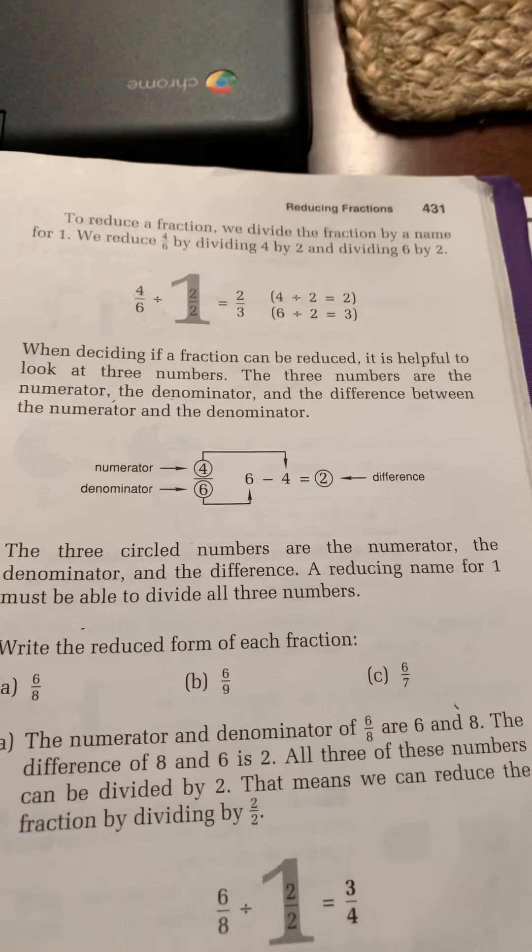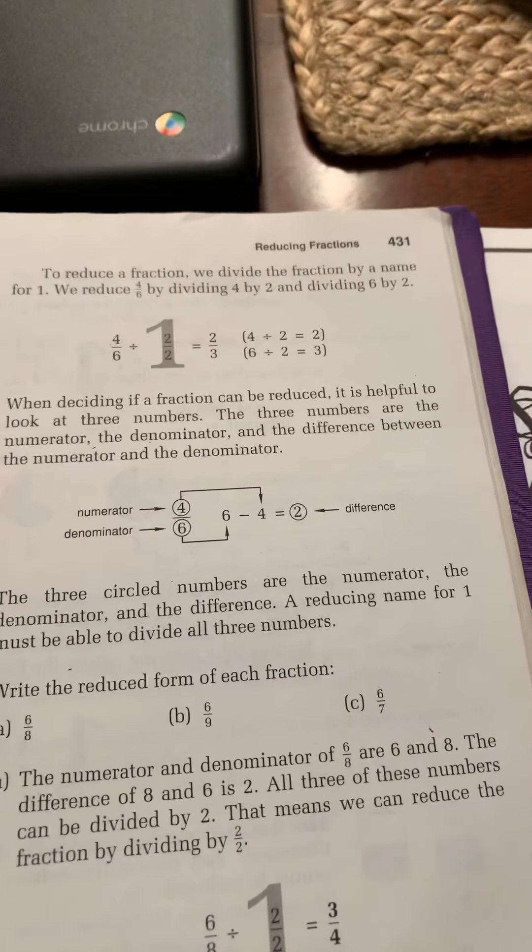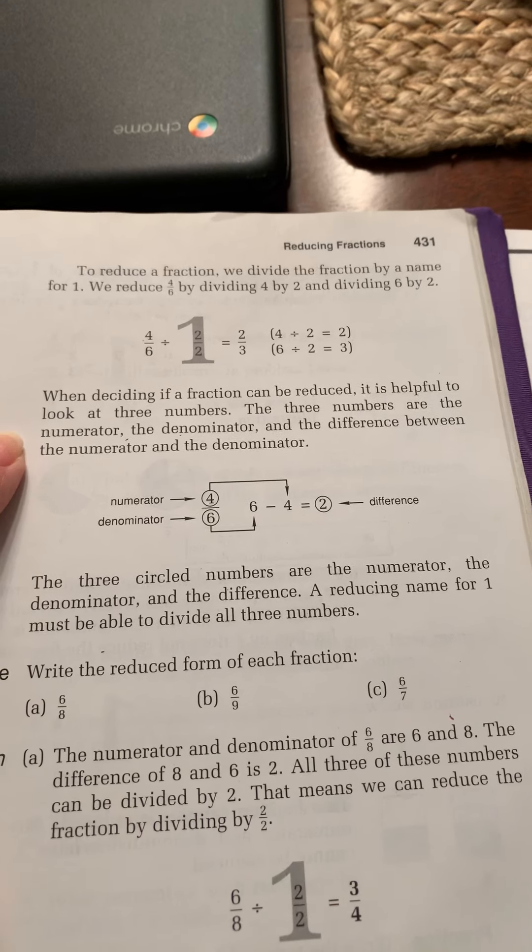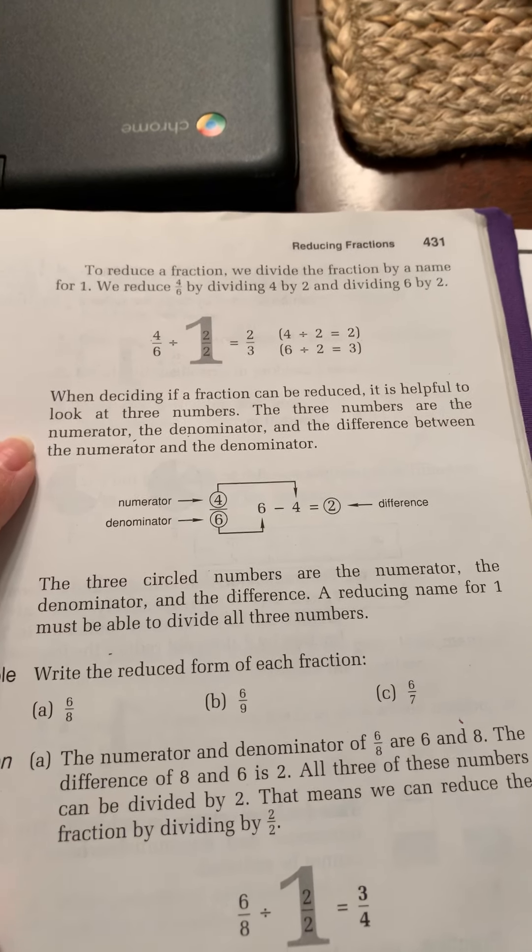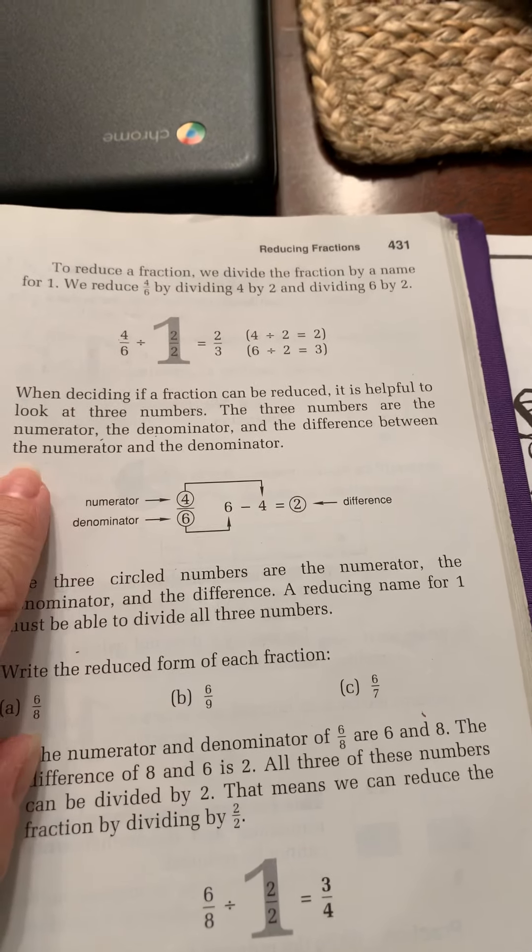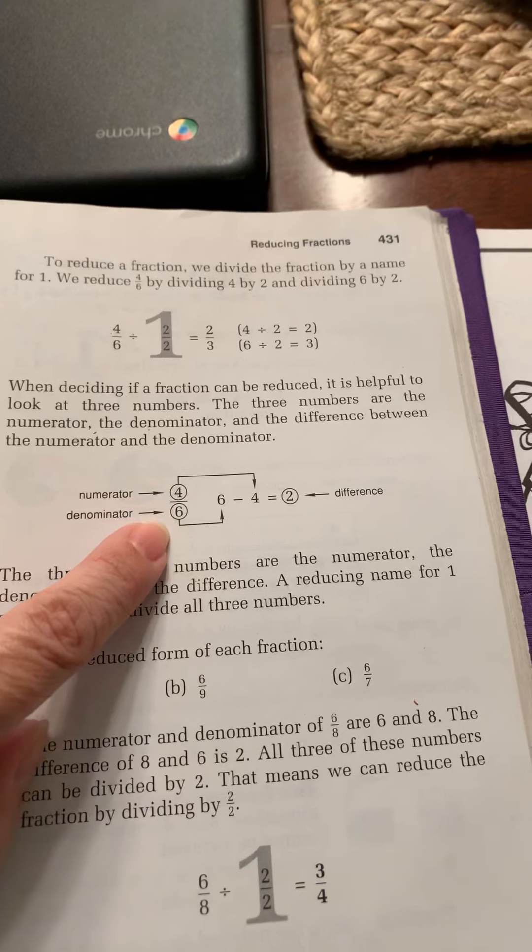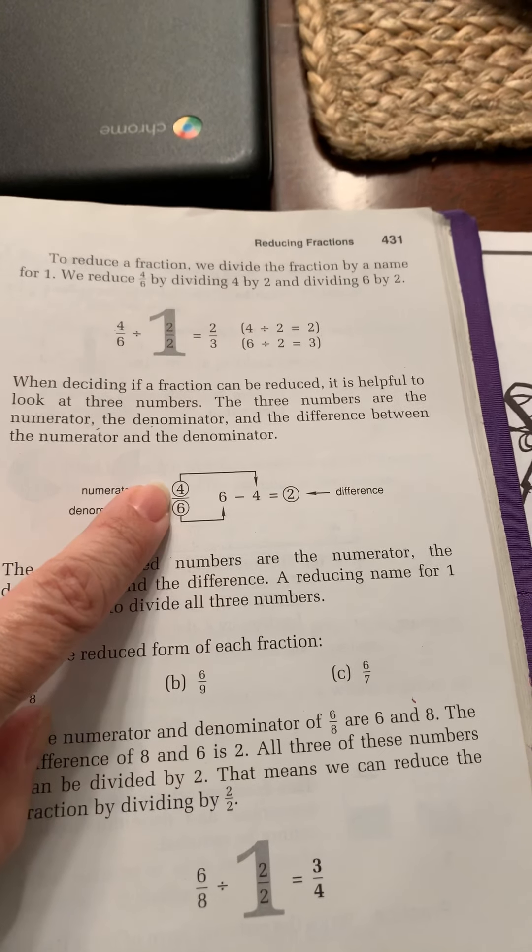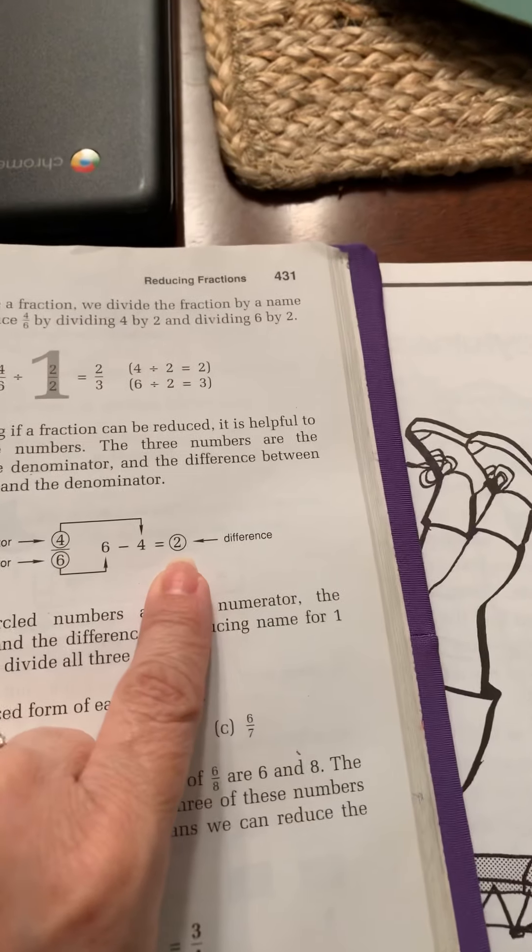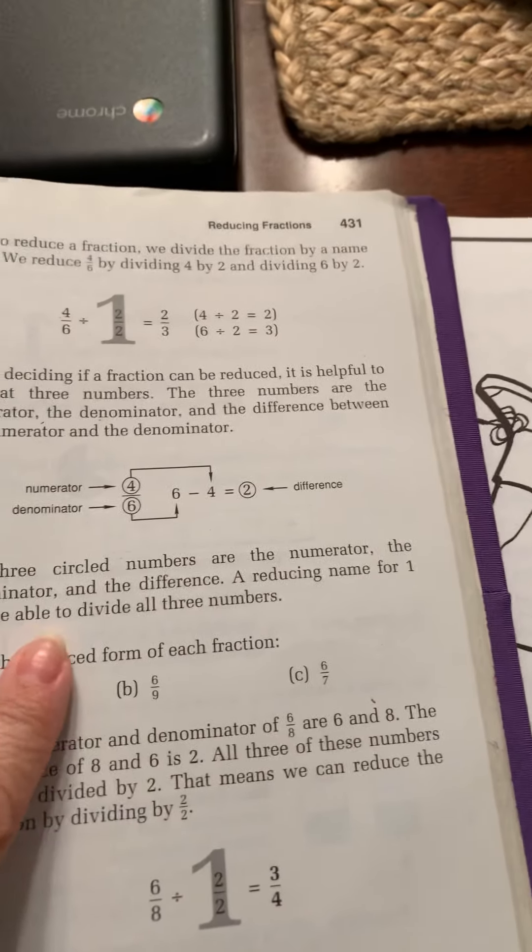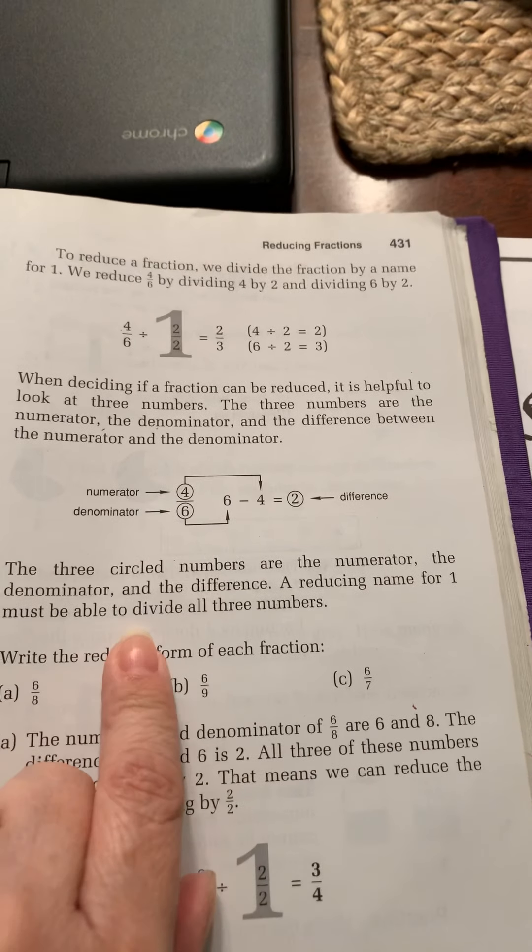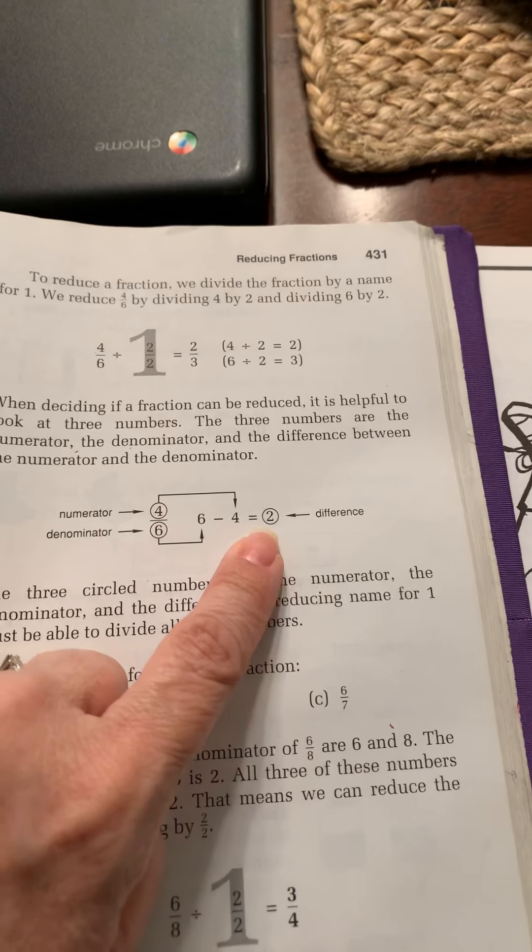When deciding, this is the key right here. When deciding if a fraction can be reduced, it is helpful to look at three numbers. The three numbers are the numerator, the denominator, and the difference between the numerator and the denominator. So the difference between these is two. The circled numbers are the numerator, the denominator, and the difference. And a reducing name for one must be able to divide all three numbers.